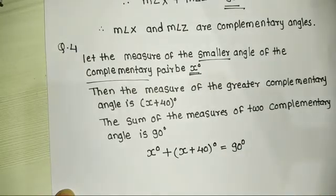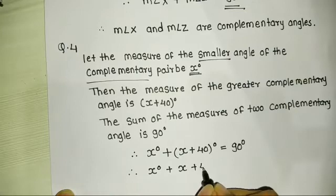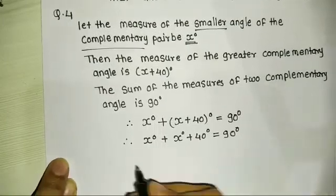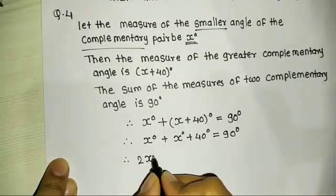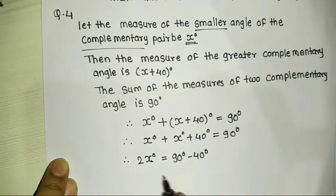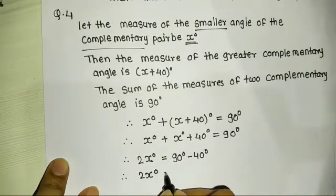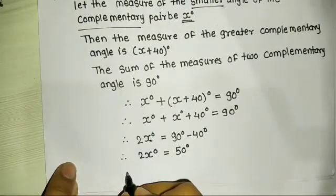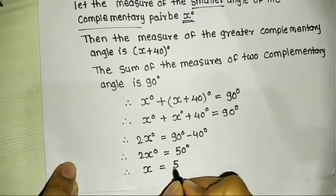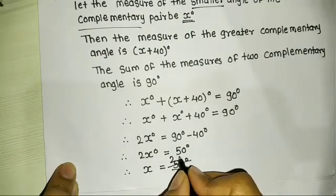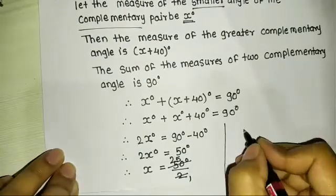Opening the bracket: X plus X plus 40 degrees equals 90 degrees. Therefore, 2X equals 90 minus 40, which equals 50 degrees. Therefore, X equals 50 degrees divided by 2, which gives X equal to 25 degrees.